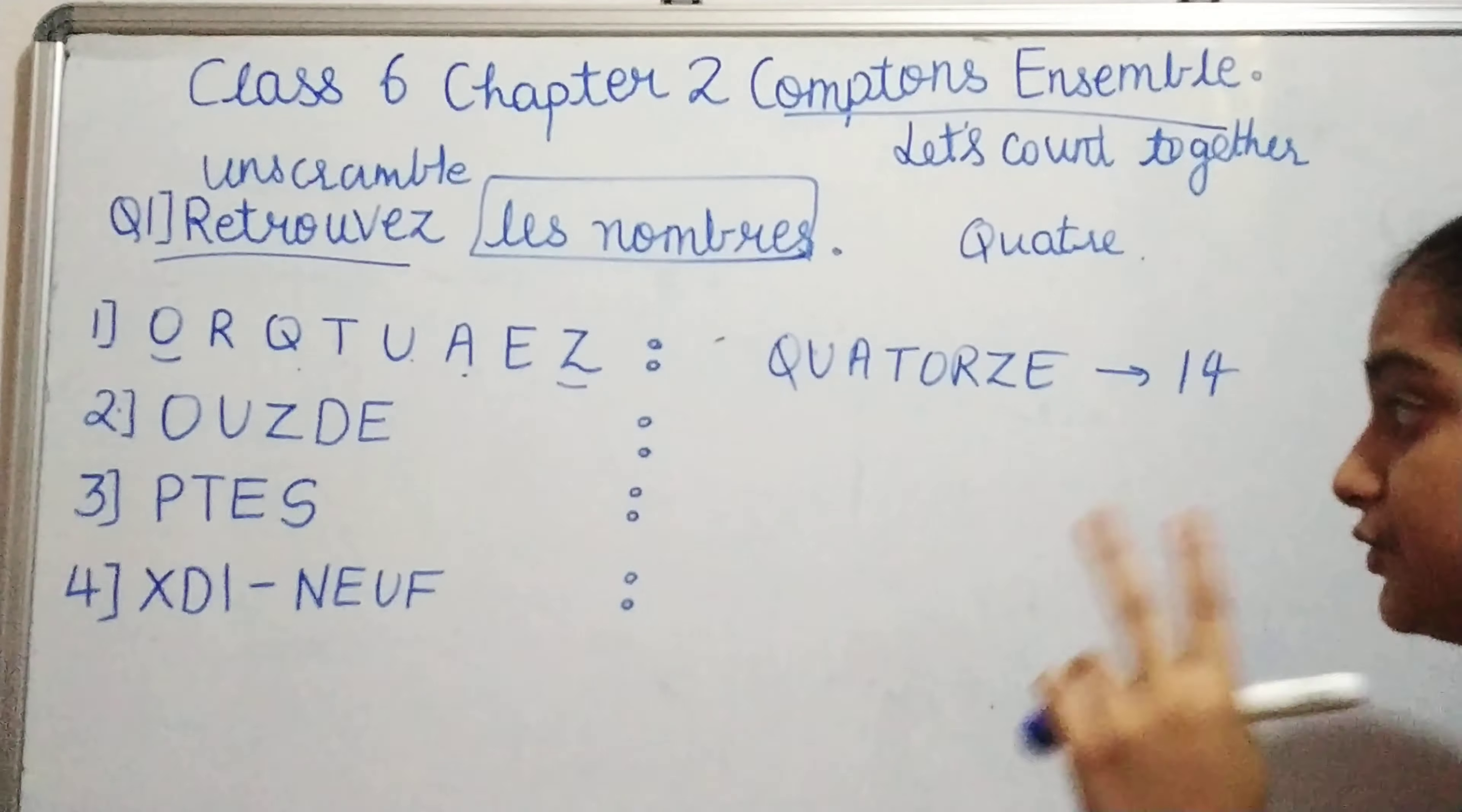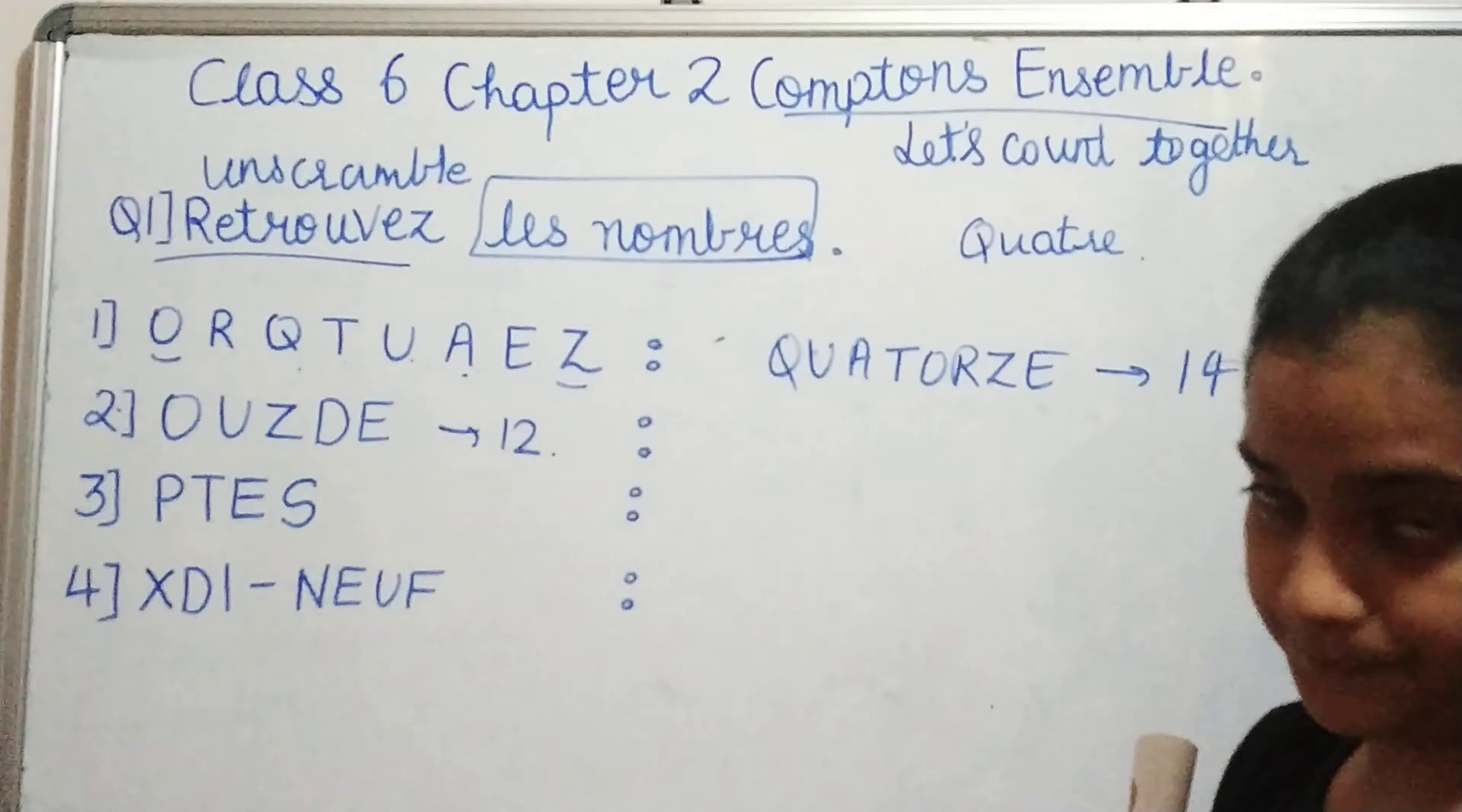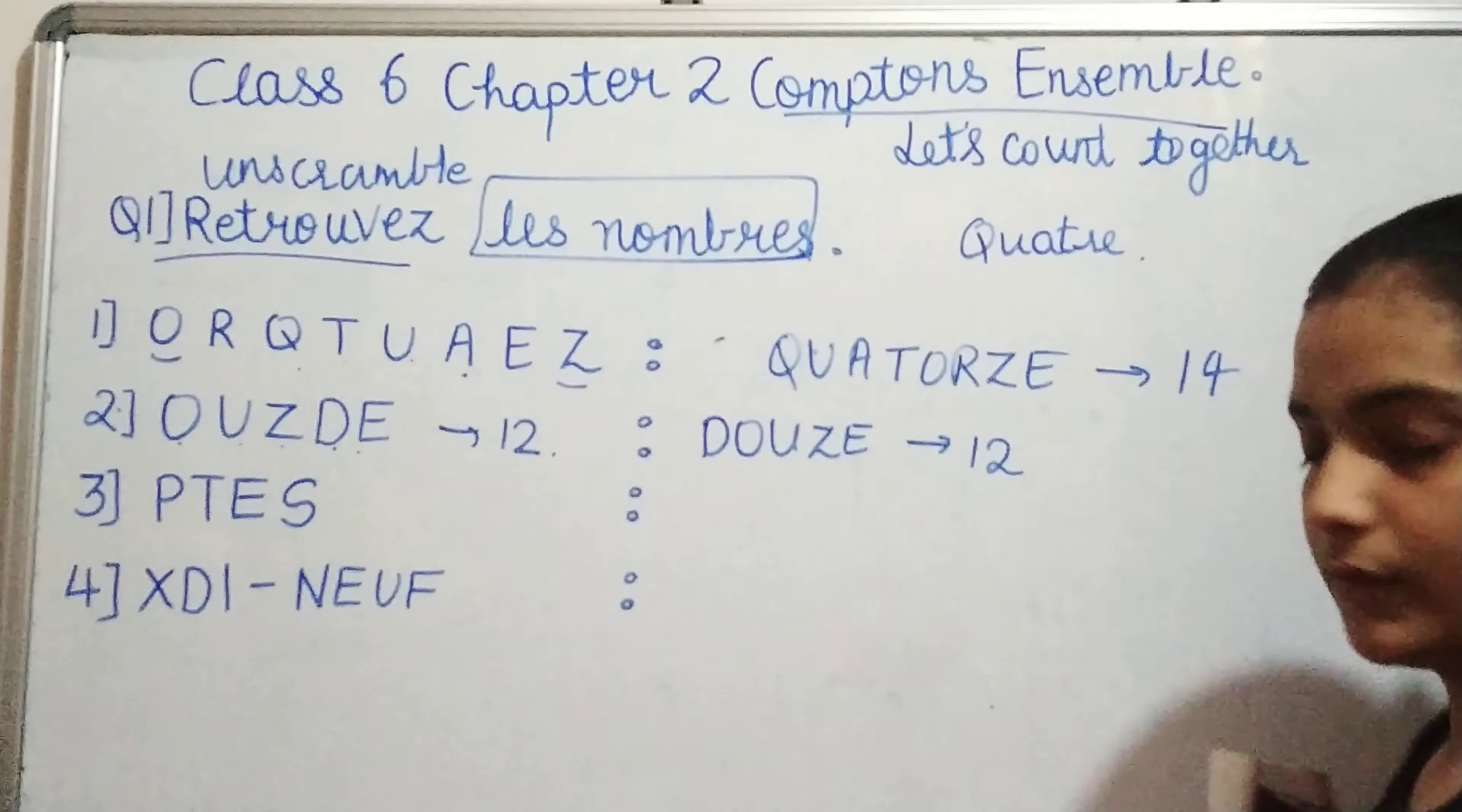Now, coming to the second, that is O, U, Z, D, E. Again, we can see that something similar to 12. So let's see whether it's 12. 12 is said in French as douze. So, this is D, O, U, Z, E. Voilà, again we are correct. This is your douze, so we write D, O, U, Z, E. That means 12.